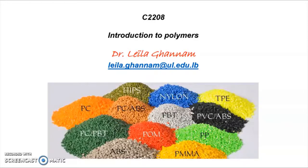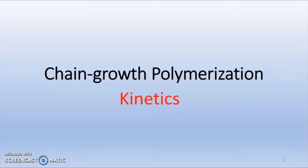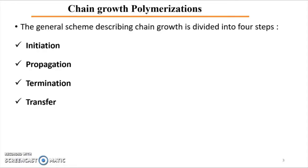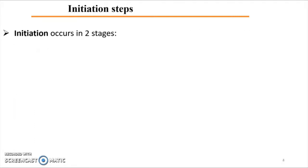Hello everybody, welcome to our last lecture for this year concerning the introduction to polymer science. After being familiar with the different steps of polymerizations, let's take a look now at the kinetics of each step and give an overall kinetic for radical polymerization. The different steps of chain growth polymerization are four, but here we will develop the kinetics of three steps: initiation, propagation, and termination, also giving the kinetic chain length and degree of polymerization, considering the transfer case.